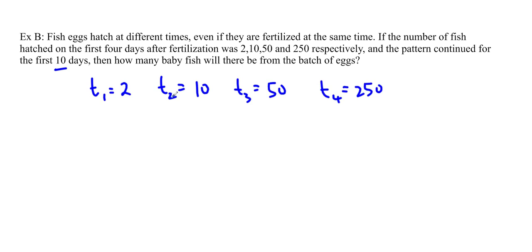So obviously we want to add all these together. So on the fourth day there's going to be 2 plus 10 plus 50 plus 250, number of fish that are hatched. So we want to know after how many, after n days, 10 days. n equals 10. And we know that t sub 1 is 2, so that's also a. And now we just have to find r and we can plug into our formula.